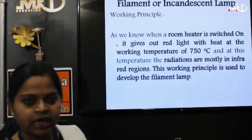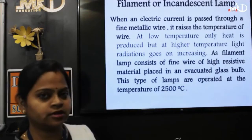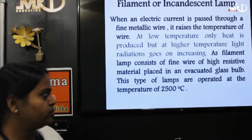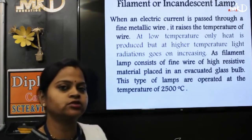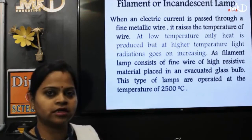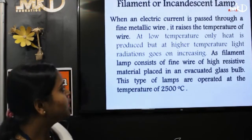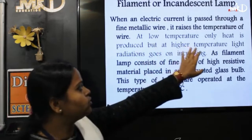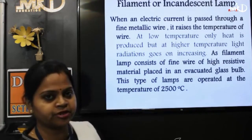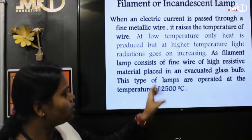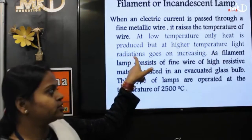We are using a filament and providing heat energy, which is then converted into light energy. When current flows through a conductor it produces heat — that is I²R. At low temperature only heat is produced, but if we raise the temperature further, light radiation will begin and will keep increasing.